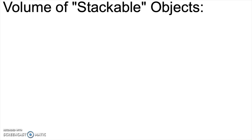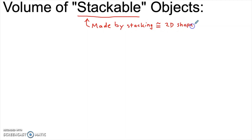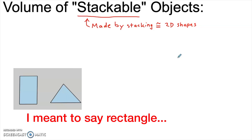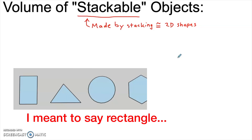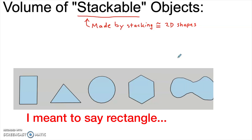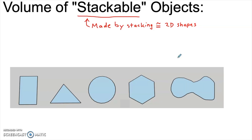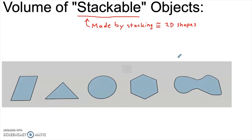Let me talk about what stackable means and why I call them that. When I say stackable objects, I'm talking about three-dimensional objects that can be made by stacking congruent two-dimensional shapes. The fact that they are congruent two-dimensional shapes is really important. When I say a two-dimensional shape, I'm essentially talking about any shape that you could draw in your notebook on a flat piece of paper.